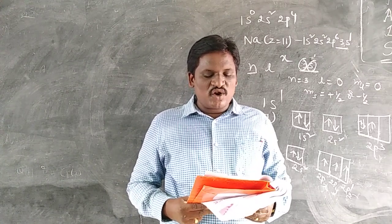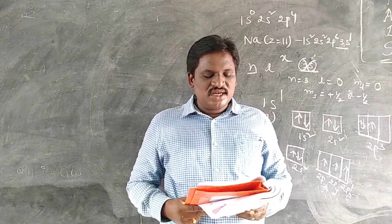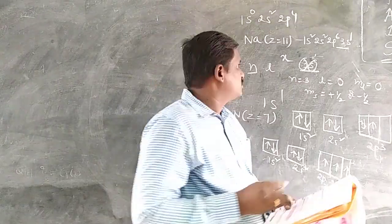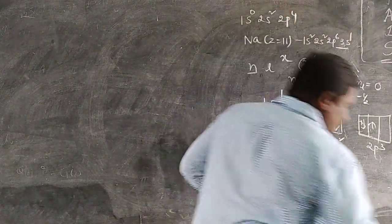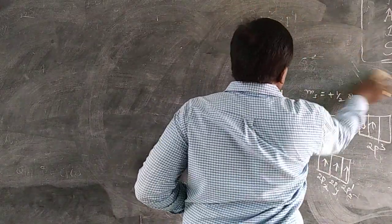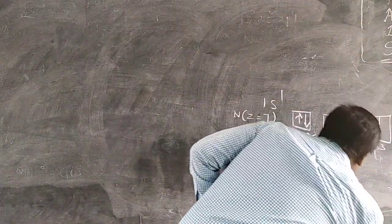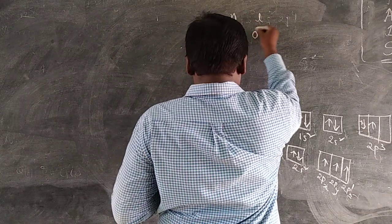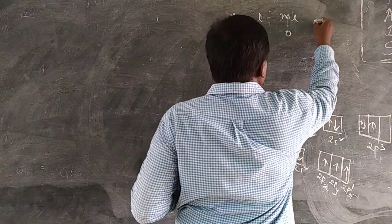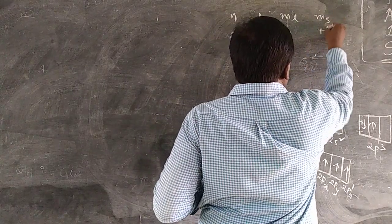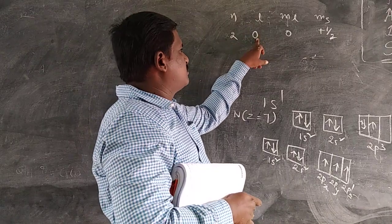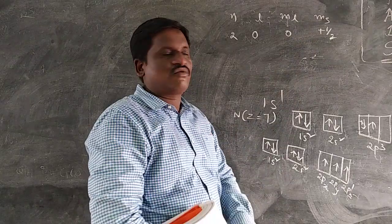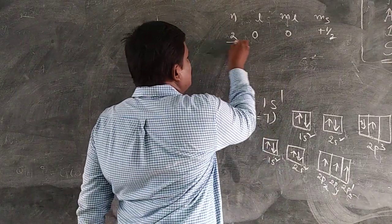An atom has the following set of four quantum numbers — to which orbital does it belong? N value 2, L value 0, ML value 0, MS value plus one-half. N is the principal quantum number, L is the angular momentum quantum number, ML is the magnetic quantum number, MS is the spin quantum number. Therefore this is the 2S orbital.